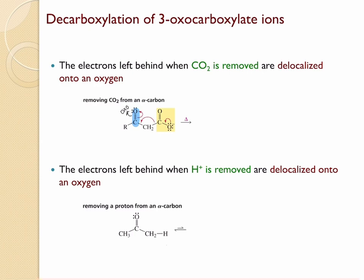3-oxo carboxylate ions can undergo decarboxylation because the electrons left behind can easily delocalize onto this oxygen. To remove carbon dioxide, these electrons come in to form the double bond between carbon and oxygen, this bond breaks, and a double bond forms there. The pi electrons from the pi bond go onto oxygen. Because there is a way to delocalize those left-behind electrons, removal of carbon dioxide is possible, giving the resulting structure.